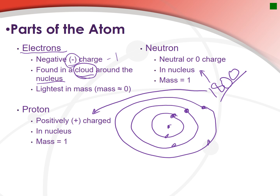The proton is positively charged — think of the word 'pro' as positive — so they have a plus one charge. Protons are found in the nucleus always and have a relative mass of one. Neutrons are neutral, which is where you get the word 'neutron,' meaning no charge — neither positive nor negative. They too are found in the nucleus and have a mass of one.